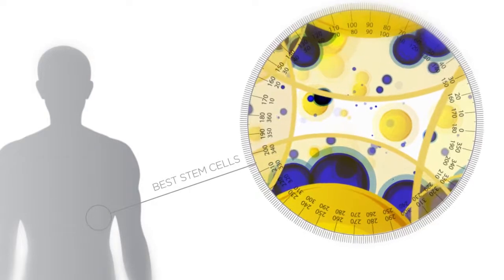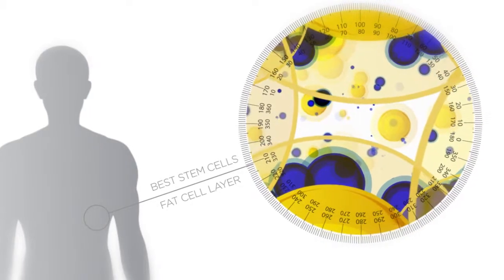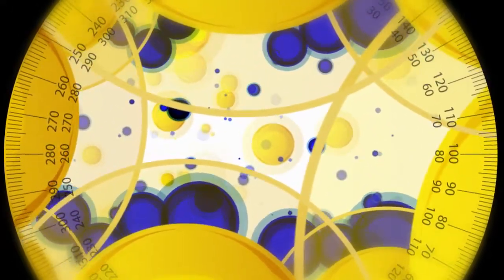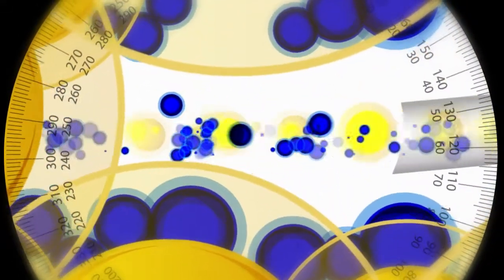The process begins with the search for the best stem cells in the human body. The stem cells are found within the body's fat layer. By using a sterile and specialized syringe, doctors extract a mixture of fatty tissue and a group of healthy stem cells.